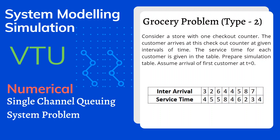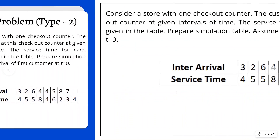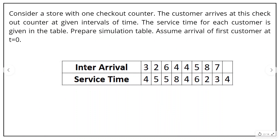In this problem we have the same question from the previous video but the type is a little bit different. In the previous video they gave us random digits for arrival time and service time, so we had to undergo step 1 and step 3. But here they have already given us the inter-arrival time and service time, so we don't have to go through step 1 and step 3 — we can directly perform step 2 and step 4. If you are not sure what steps I am referring to, please check the previous video; the link will be in the description.